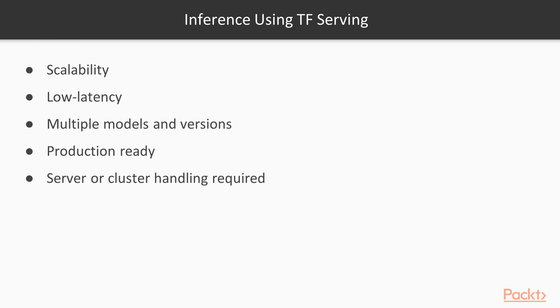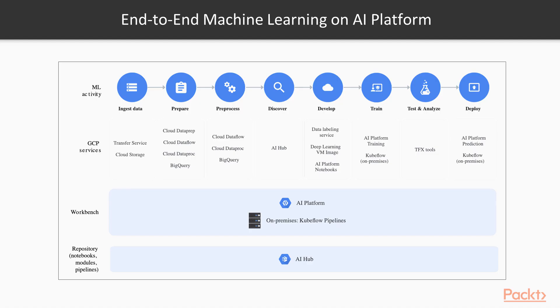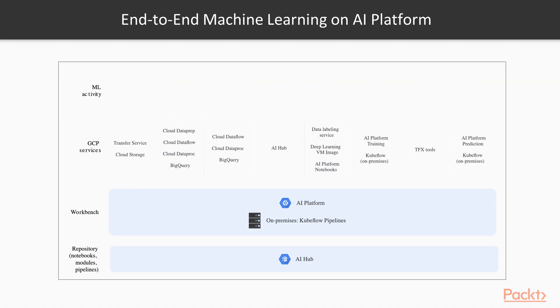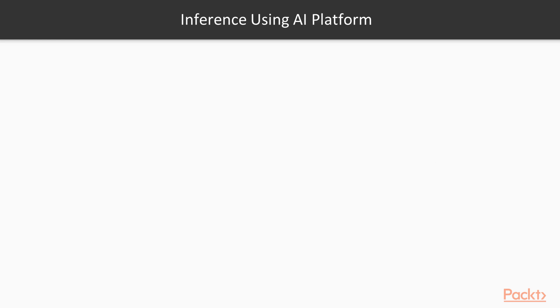Let's proceed to the next option for putting models into production on GCP: AI Platform. We discussed AI Platform already in the first section of this course, where we said that AI Platform is essentially the workbench that covers the whole ML process — from ingesting data, developing your model, training it, testing it, and finally deploying the model. Now we'll talk about the specific feature called AI Platform Predictions, and what its main purpose is.